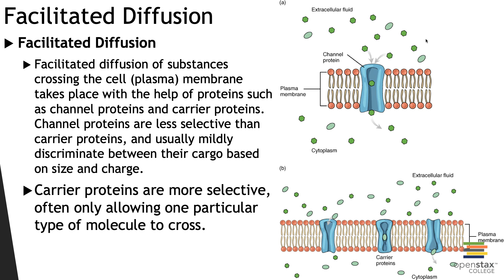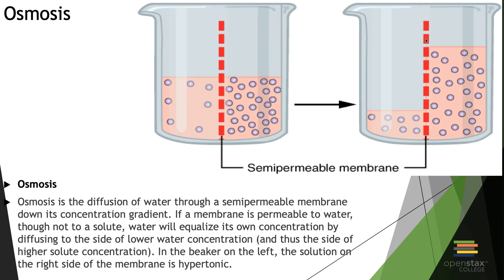Facilitated diffusion means the process is helped by something but does not necessarily require ATP — this is where channel proteins come into effect. It is a little more selective than free non-facilitated diffusion, but still much less selective than processes requiring energy. Osmosis is the diffusion of water through a semipermeable membrane down its concentration gradient, and this helps define the idea of tonicity that we talked about in lab.